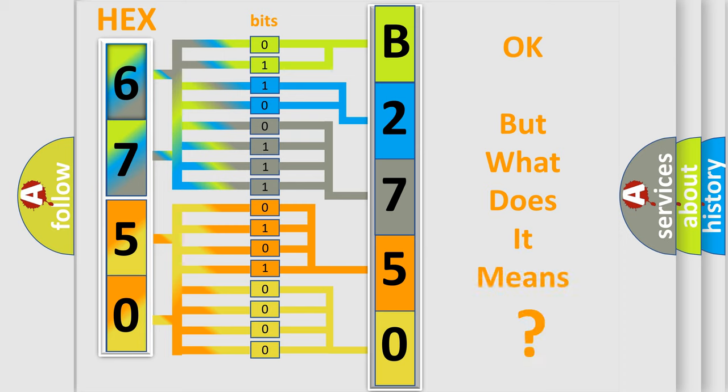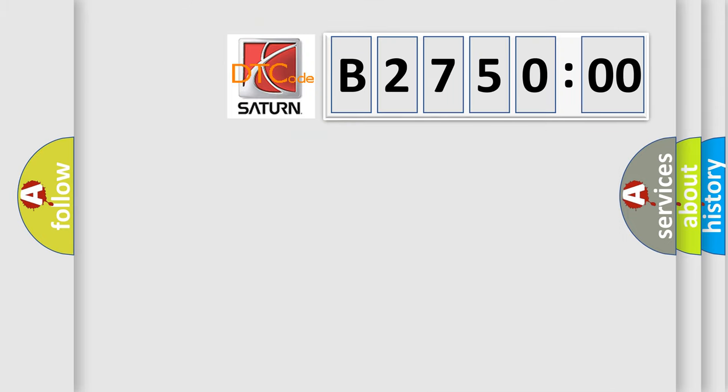The number itself does not make sense to us if we cannot assign information about what it actually expresses. So, what does the diagnostic trouble code B275000 interpret specifically?